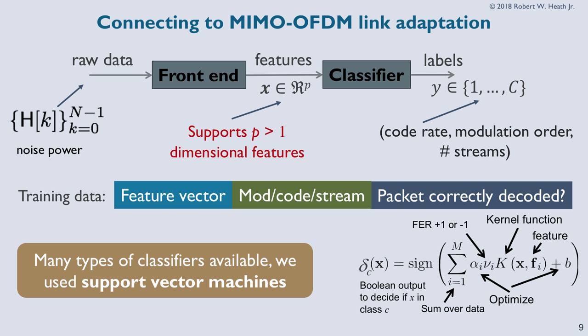The support vector machine fits a thresholding function so you can decide whether, according to a given feature, it corresponds to a given class or not. For example, we could ask: does this observed channel satisfy the frame error rate constraint with 64-QAM, two streams, and a rate two-thirds code — yes or no? With a whole bunch of these classifiers, we could determine which modulation codings and streams satisfy the rate requirement, then pick the one with the highest throughput.